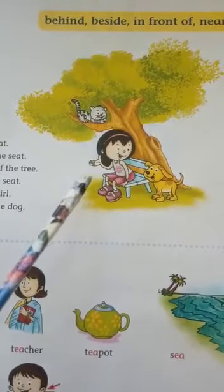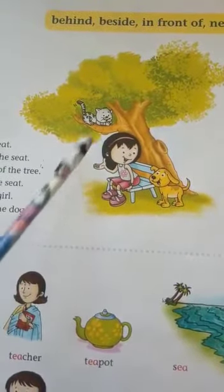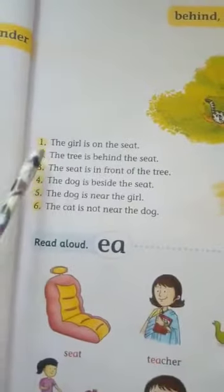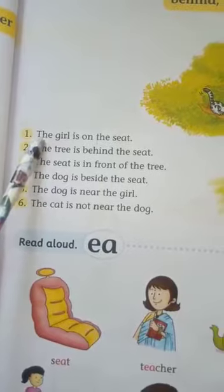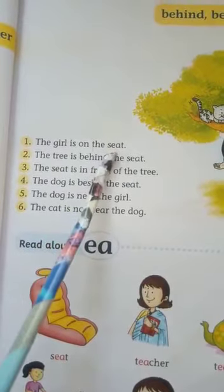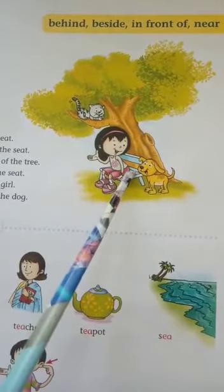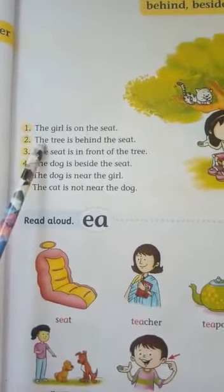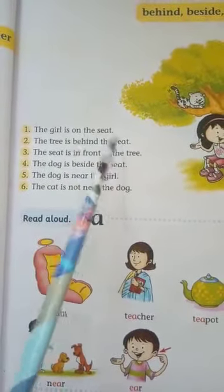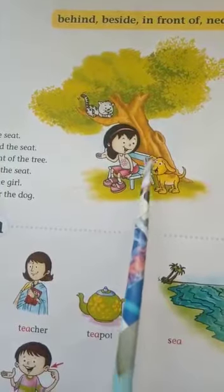So children, we start reading. First we look at the picture. The girl is on the seat. Now we read the sentence: the girl is on the seat. Now where is the tree? The tree is behind the seat. Now where is the seat? The seat is in front of the tree.